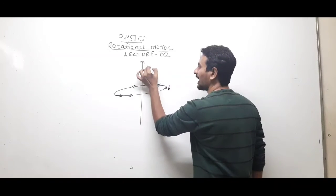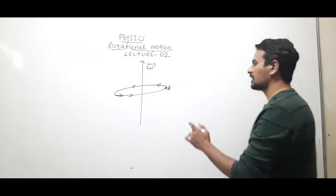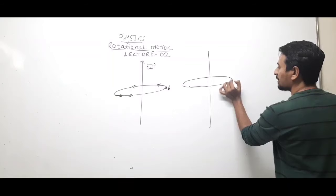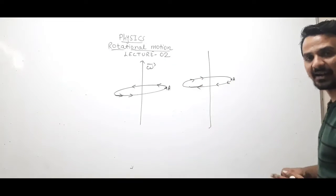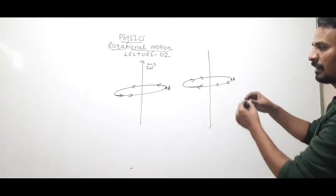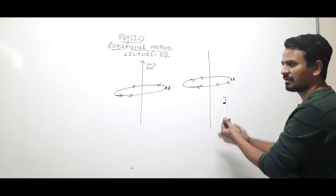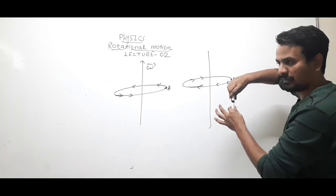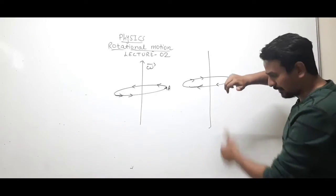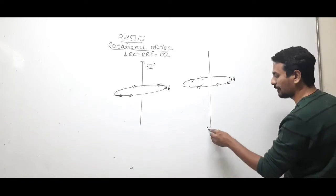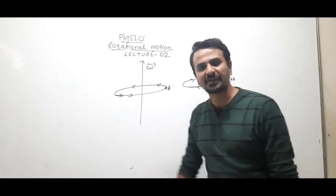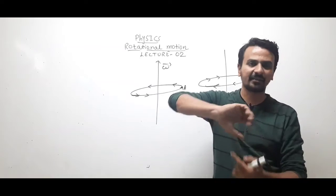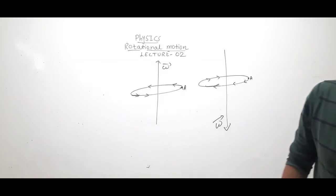To summarize the direction rule: if the particle rotates anticlockwise, ω is in the upward direction. If it rotates clockwise, ω is in the downward direction. Place a screw parallel to the axis of rotation, rotate it in the direction of the particle's rotation, and the advancement of the screw gives the direction of angular velocity.